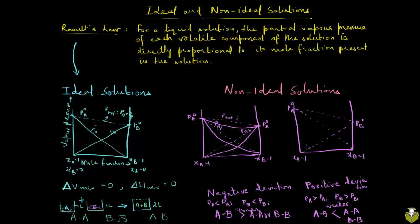Then here you have a positive deviation. This is PB and this is PA, PB ideal, PA ideal. And as a result, P total also has a positive deviation, and this is P total ideal.